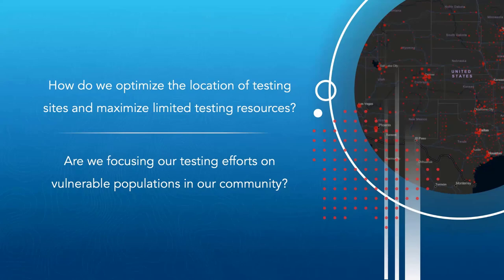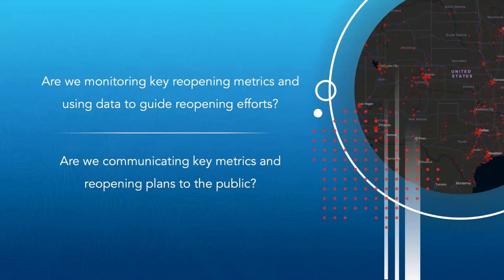The first thing is how do we help expand the capacity of our testing resources. While we can't provide the testing equipment, ArcGIS can really help you optimize the location of those testing locations and ultimately help you understand if you're focusing your testing efforts on the vulnerable populations in your community. The next thing we wanted to look at is how can we help communities monitor key reopening metrics they're establishing — and ultimately guide reopening efforts with data you're collecting on important things like symptoms, cases, and healthcare capacity.